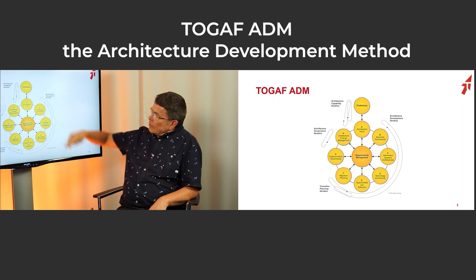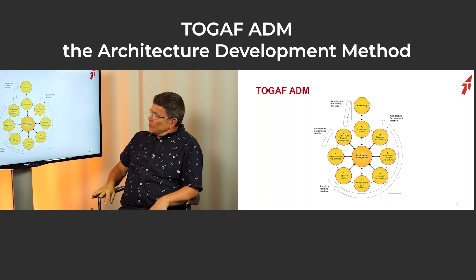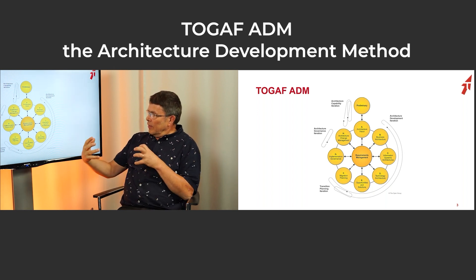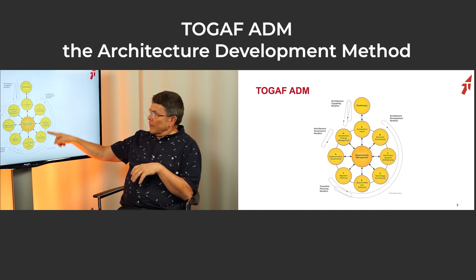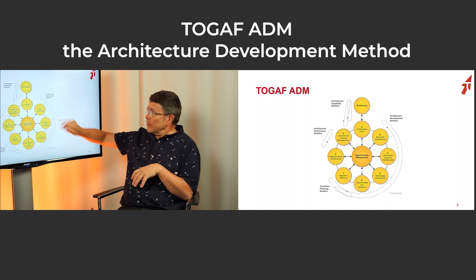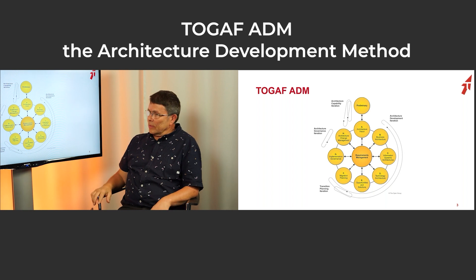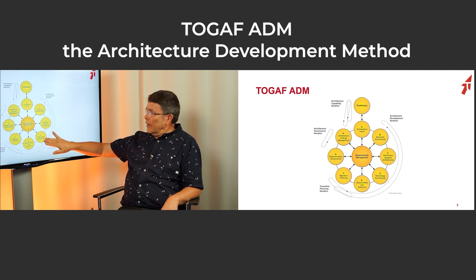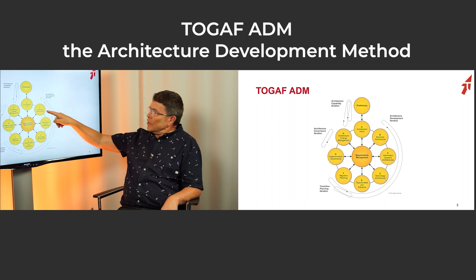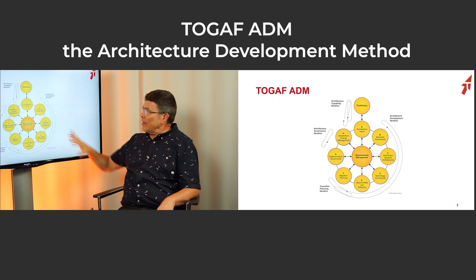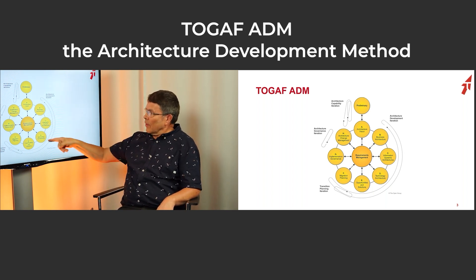The next phases are business architecture, information system architecture, and technology architecture. These three are basically the same — it's just that they are interested in different domains. The order can be anything: we don't have to start with business architecture. If the business architecture is already there and doesn't need to change, go directly into information system architecture, or skip even that and just look at technology. They're just in this order to make the image look nice — you can do them at the same time, skip them, or go back.